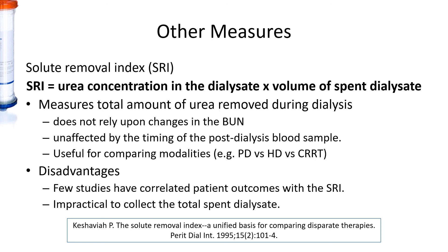There are various other measures besides KT/V that you can use to measure dialysis clearance. One example is the solute removal index, which is the urea clearance concentration in the dialysate multiplied by the volume of dialysate. There are various benefits to the use of the solute removal index, but the main disadvantage of using the SRI and also all the other measures that have been proposed is that there have been few studies which correlated patient outcomes with these measures.